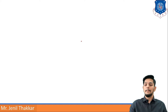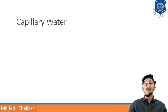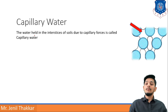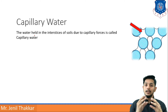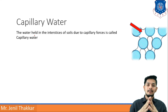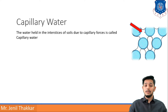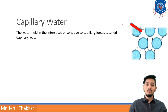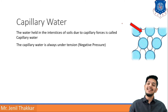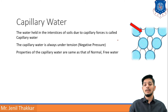Capillary water is the water held in the interstices of soils. Interstices means the gaps or linings between the soil particles. The water held in these interstices due to capillary forces is called capillary water. Capillary water is always under tension, or we can say it is under negative pressure.